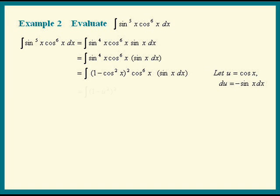We get the integral of 1 minus u squared, the whole thing squared, times u to the 6th times sine x dx is negative of du. Let's put that negative sign outside the integral. Do we know how to integrate that?